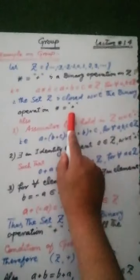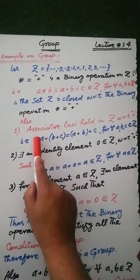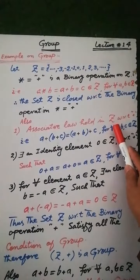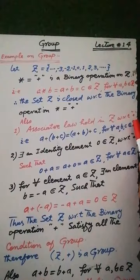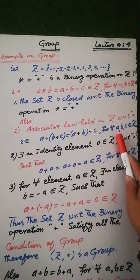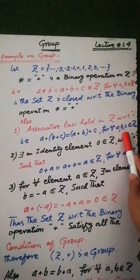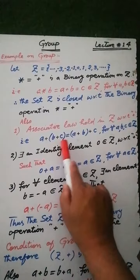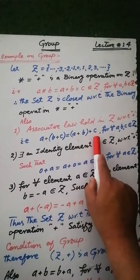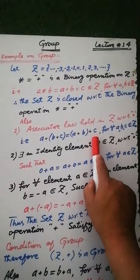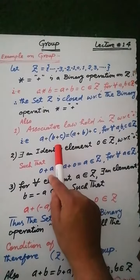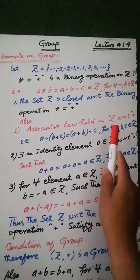Also, the associative law holds in the set Z of all integers with respect to the binary operation addition. That is, for each three integers a, b, c: a plus (b plus c) is equal to (a plus b) plus c. Therefore, the associative law with respect to ordinary addition holds in the set Z of all integers.